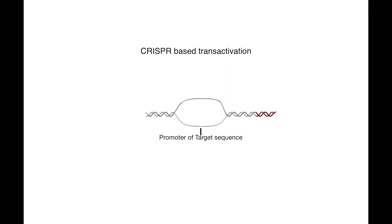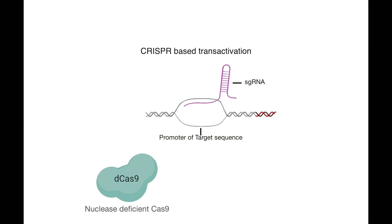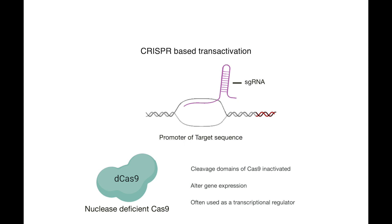CRISPR-based transactivation also requires two components: a single guide RNA and dCas9, also known as nuclease deficient Cas9, which has the cleavage domains of Cas9 inactivated. Different from Cas9, it can alter gene expression once it binds to the DNA, and is therefore often used as a transcriptional regulator.